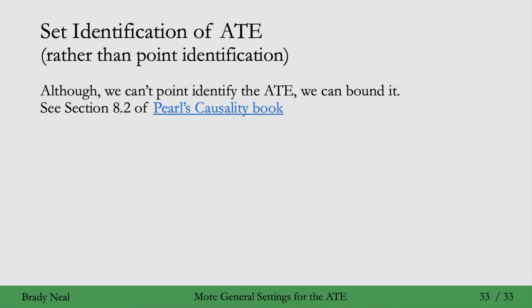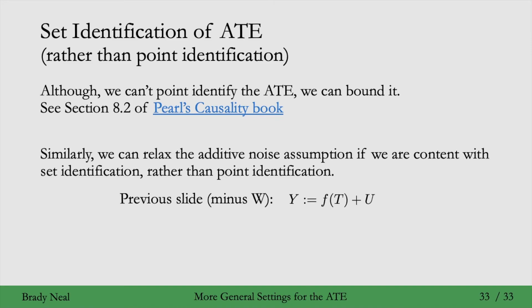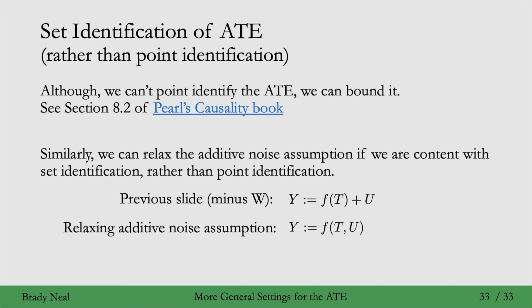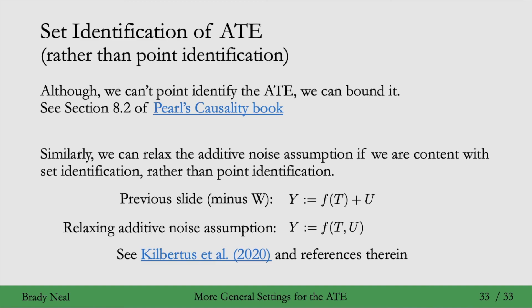Giving up on point identification and focusing more on set identification can allow us to relax the additive noise assumption. Here, the structural equation for Y is F of T plus some additive noise — minus the observed covariates W for simplicity. If you're not worried about point identification, you can move U inside the function F, relaxing that additive noise assumption. Check out this paper and its references for how to do set identification and get bounds on the average treatment effect using these more flexible instrumental variable methods.